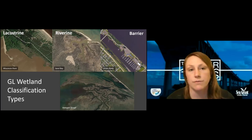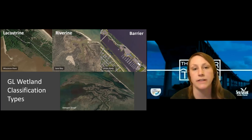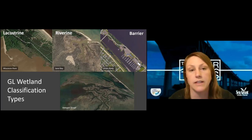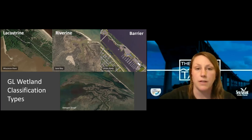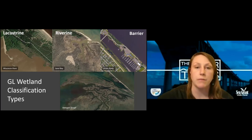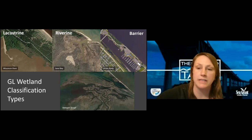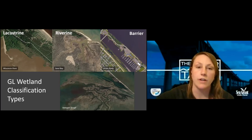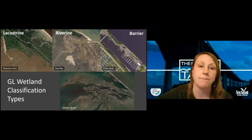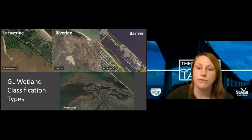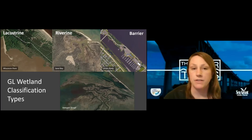The second type is riverine. This example is Sand Bay in Wisconsin, part of the Apostle Islands National Lakeshore on the mainland. These riverine systems were formed by glaciers. We have glacial rebound where the tectonic plate is still lifting faster on the north, so our southern shore riverine systems are getting drowned out — that's why you see more fingers creeping into the wetlands. Riverine systems are subject to watershed influences like nutrient loading, with sediments settling at the river mouth.